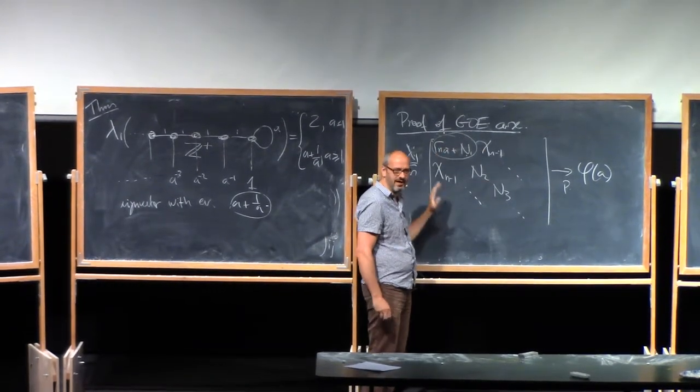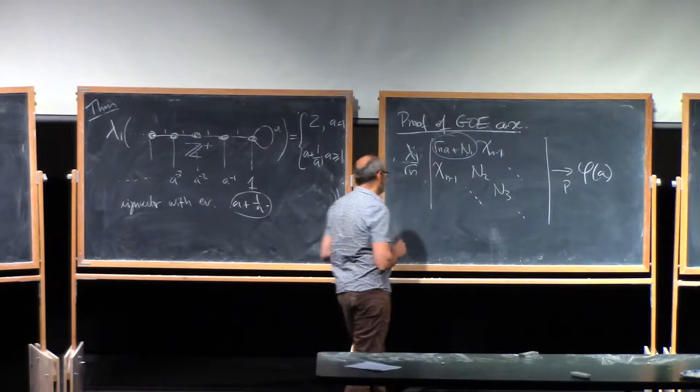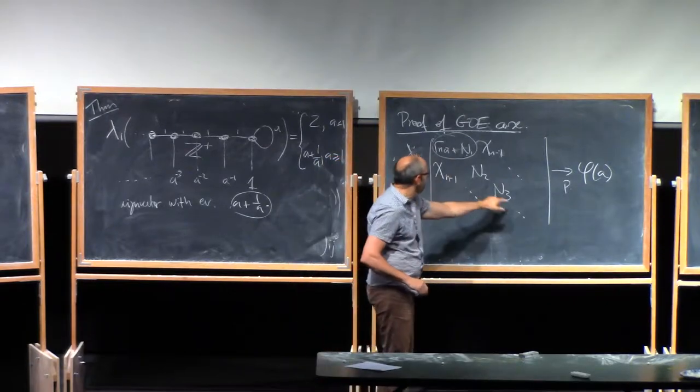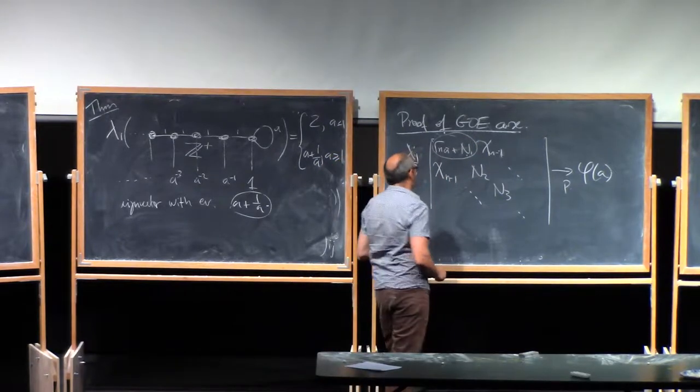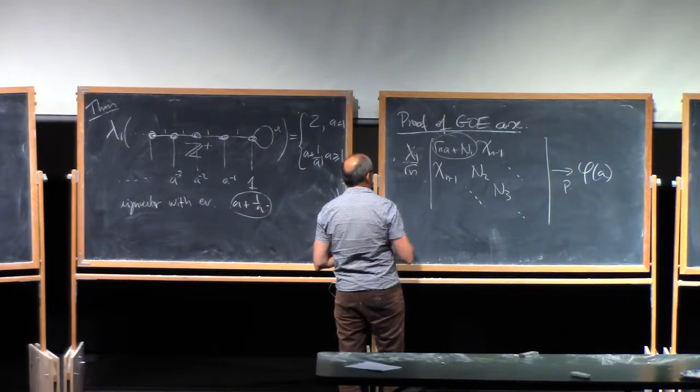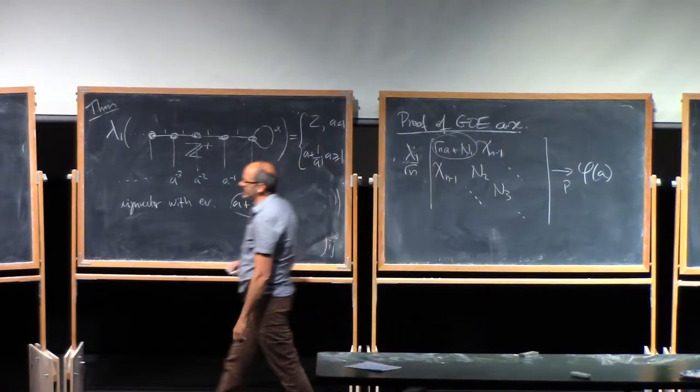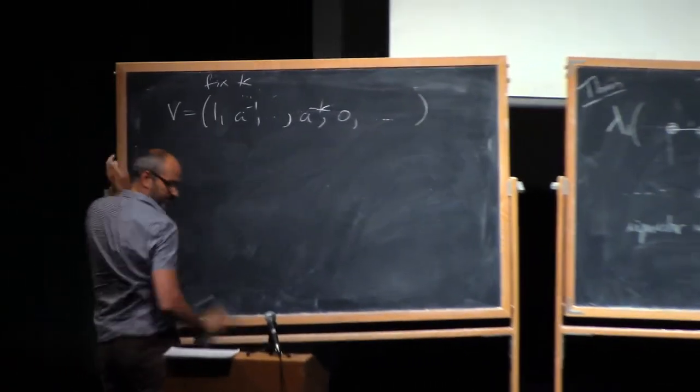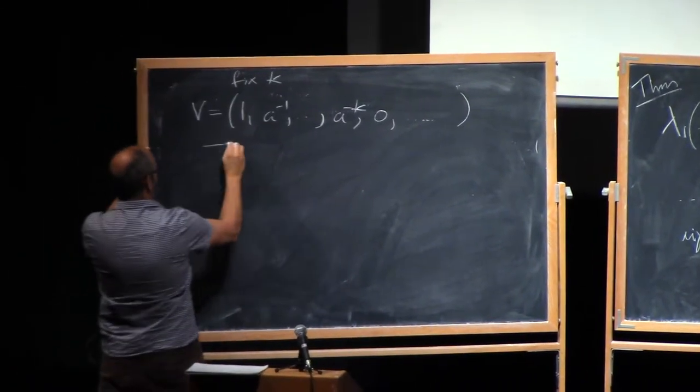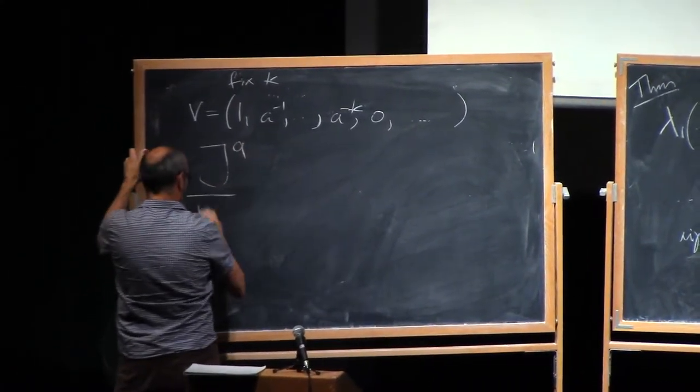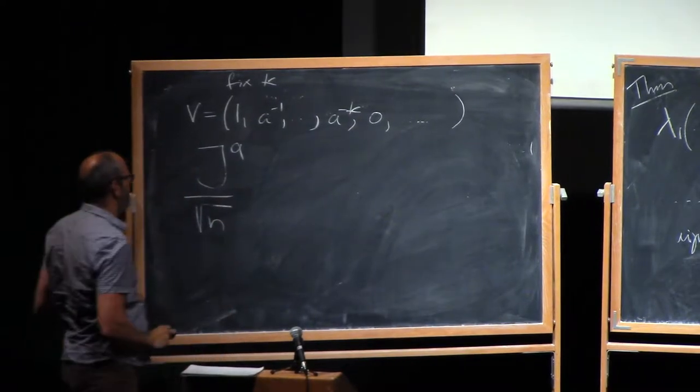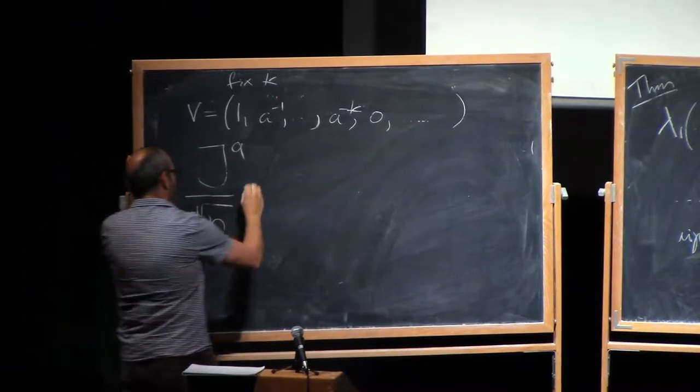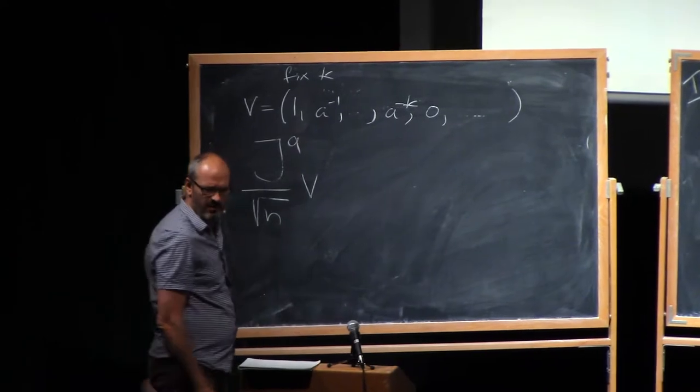So J over root n, the top corner of that, which is very close to that matrix, which has zeros here, and this is the off-diagonal. Except for this A, of course, which you see. Let me call it GA so that you can distinguish from the unperturbed J. It's too small, right? So GA over root n. And let's plug in this vector V.